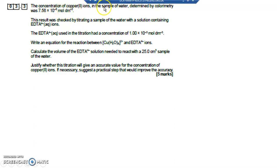The concentration of copper 2 ions in the sample of water determined by colorimetry was 7.56 times 10 to the minus 6. This result was checked by titrating a sample of the water with a solution containing EDTA ions.